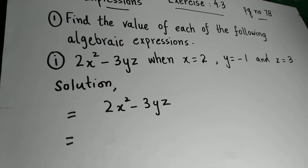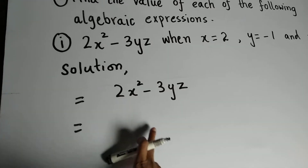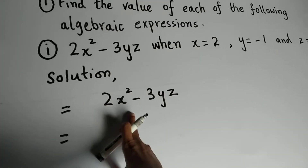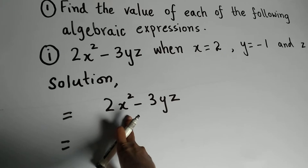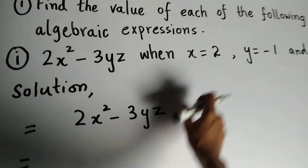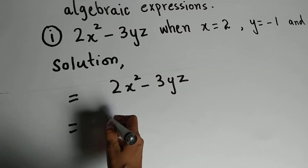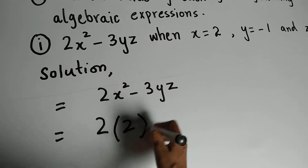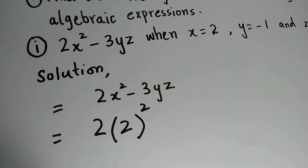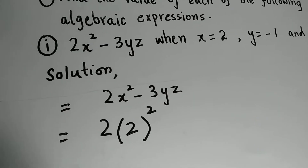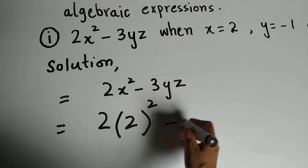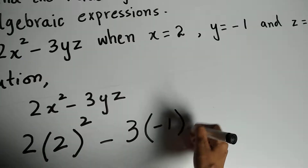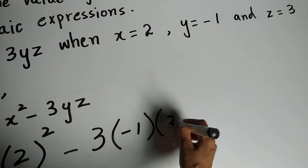Here we have the question: 2x squared minus 3y divided by z. The values given are x equals 2, y equals minus 1, and z equals 3. Now substitute: you write 2, then in brackets 2 squared, because x squared is given. Then minus 3, and y is minus 1, and z is 3.